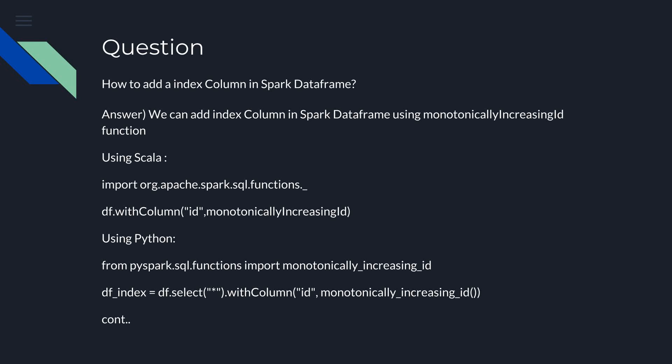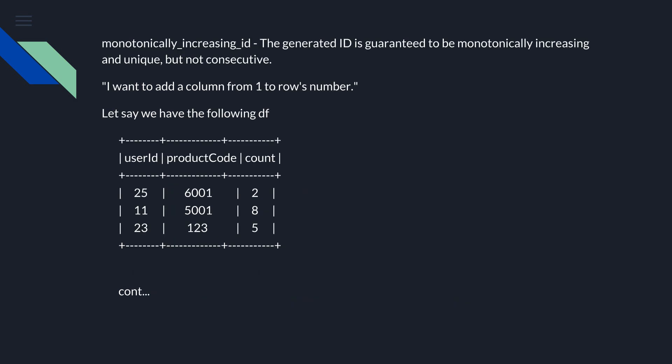How to add an index column in a Spark DataFrame. We can add an index column using the monotonically_increasing_id function. This function is available for both Scala and Python. The generated ID is guaranteed to be monotonically increasing and unique, but not consecutive.